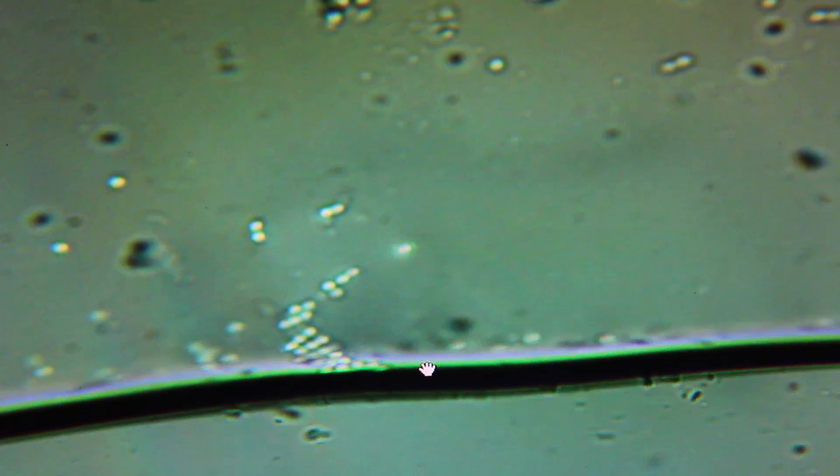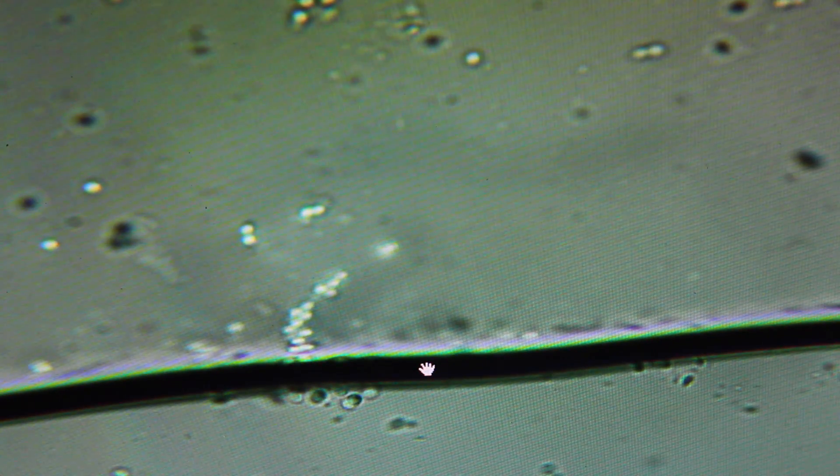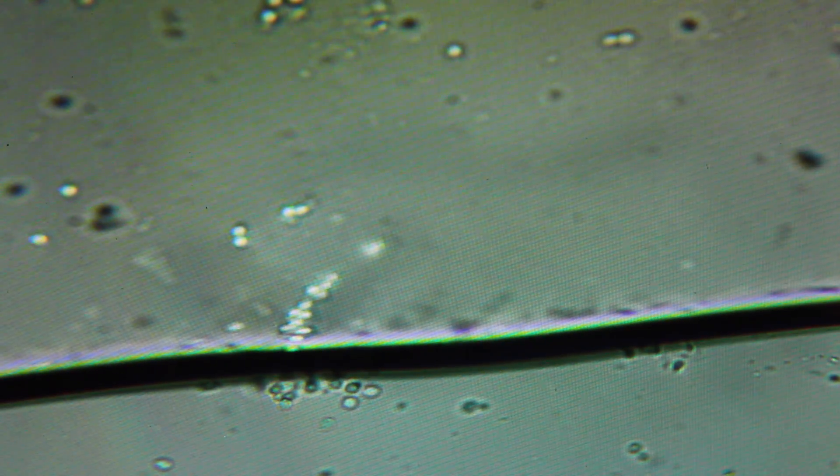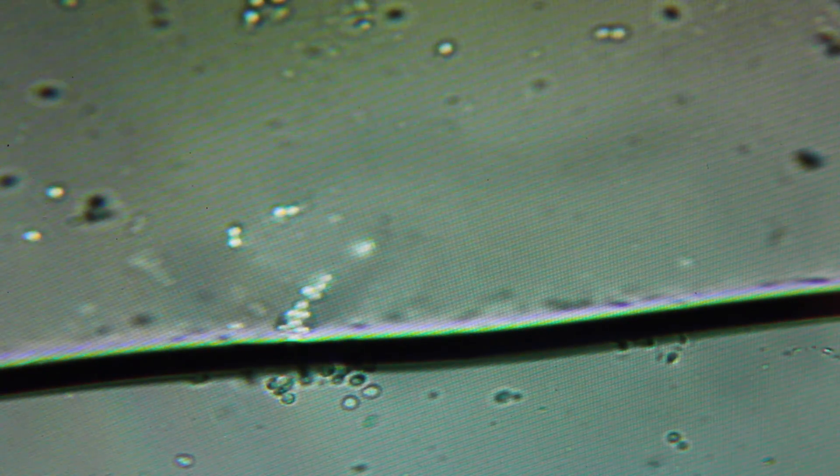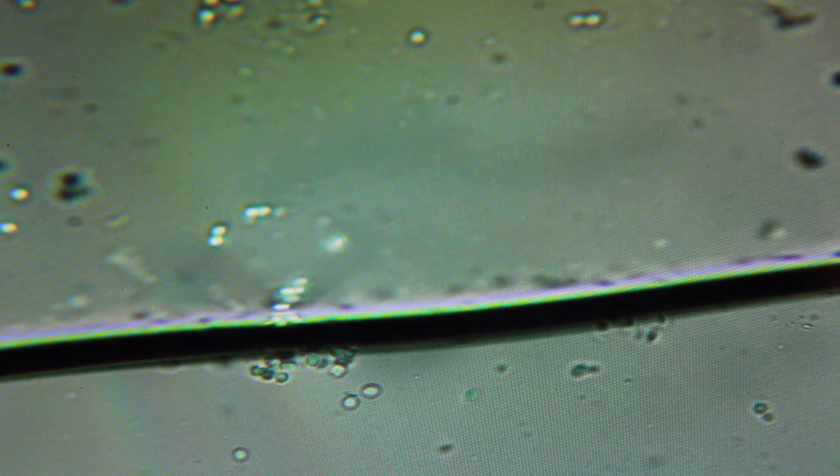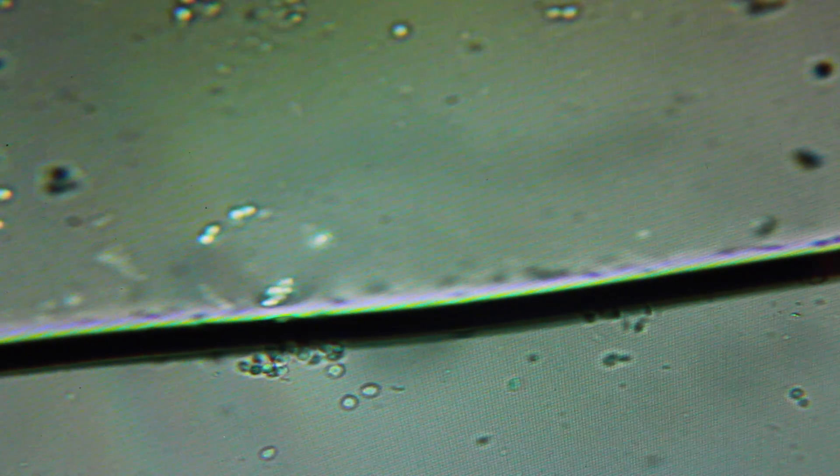When the bacteria touch the silver, upon contact, silver strips an electron from its membrane, causing it to become discolored, lose an electron, then become flat. You can see on the bottom half of this slide the dead cell membranes flowing by.